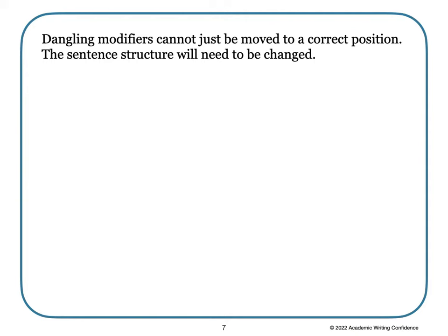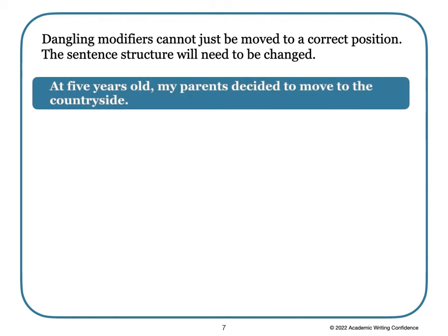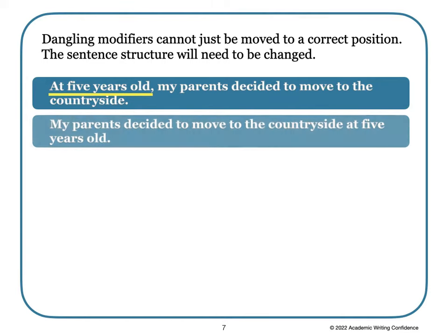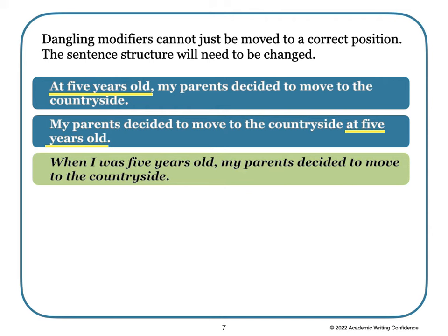Dangling modifiers cannot just be moved to a correct position — the sentence structure will need to be changed. Consider: 'At five years old, my parents decided to move to the countryside.' The phrase 'at five years old' seems to indicate the parents were five years old. If we move the phrase to the end — 'my parents decided to move to the countryside at five years old' — it still sounds like the parents were five years old. We need to rewrite it as: 'When I was five years old, my parents decided to move to the countryside.' Now it is clear that the writer was five years old, not the parents.